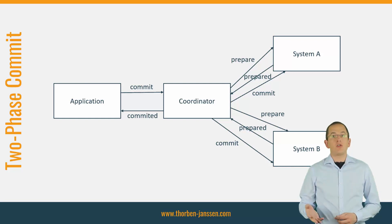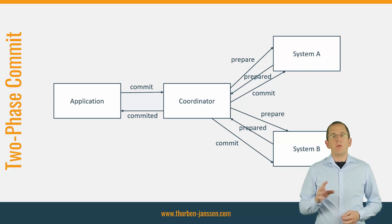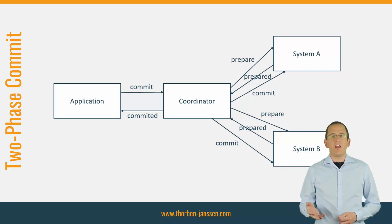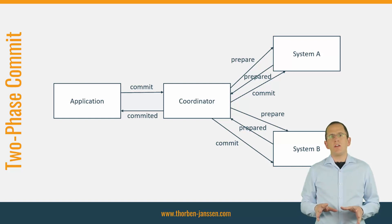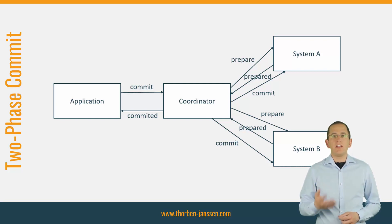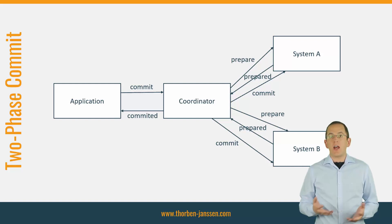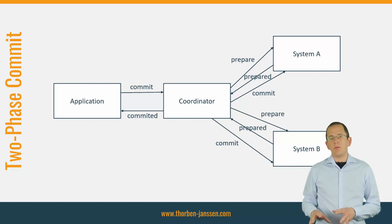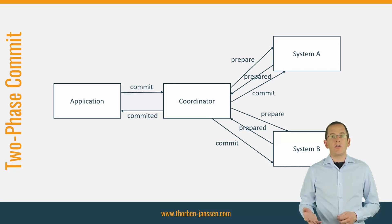The transaction was successful and all changes get committed. If any system doesn't answer the prepare command or responds with 'failed,' the transaction coordinator sends an abort command to all systems, rolling back all changes performed within the transaction. As you can see, a two-phase commit is more complicated than a simple local transaction commit. After a system confirms the prepare command, it needs to ensure it will be able to commit when it receives the commit command. Nothing is allowed to change until that system gets the commit or abort command. The only way to ensure that is to log all the changed information, and as long as this log is active, no other transaction can use that information. These logs can become a bottleneck that slows down your system.